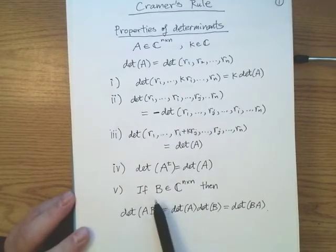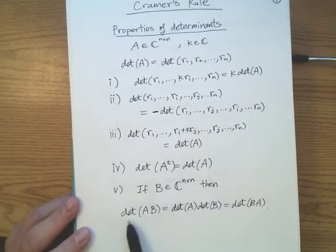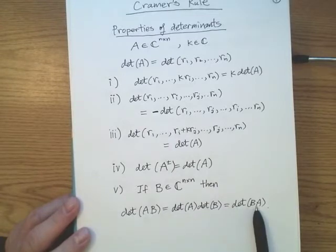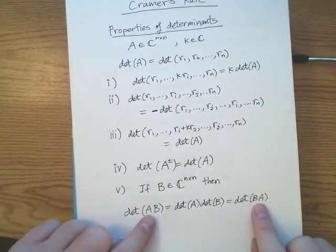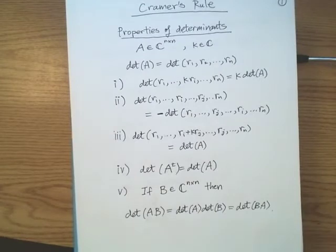One last property — not going to come into play here but we're throwing it in for completeness: if B is another n×n matrix, then the determinant of the product A times B is the product of the determinants. That would also equal the determinant of B times A. Notice that even though A×B may differ from B×A because matrix multiplication is not generally commutative, the determinants will still be the same.